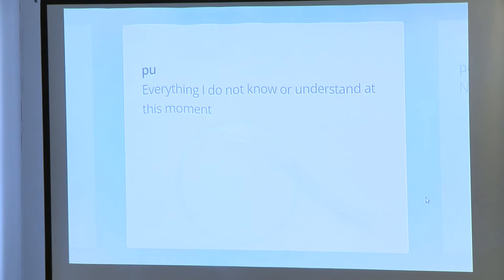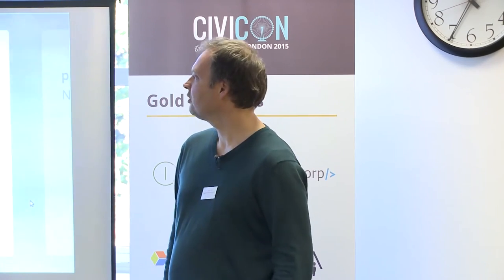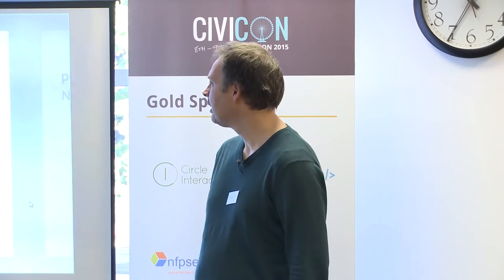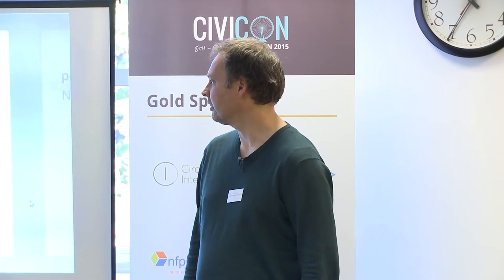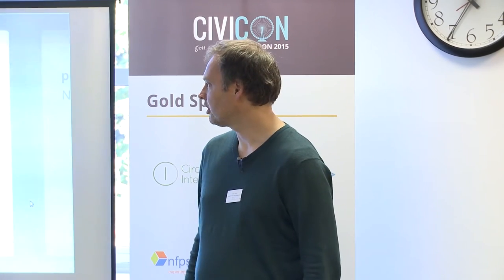The word is called 'pu,' pronounced in Dutch. It means 'everything I do not know or understand at this moment.' What this says is: everything I do not know or understand at this moment — because what I do not know, you might know. It's a personal word; every one knows something differently than the other. 'Everything' means it's a collection — like a mathematical collection. It doesn't exist in reality; it only exists in our minds when we use this word.